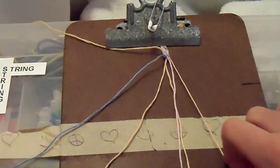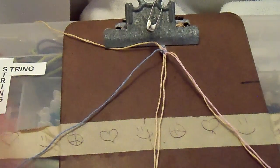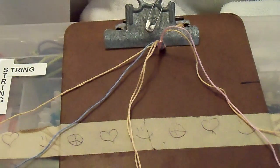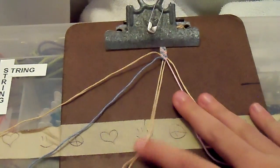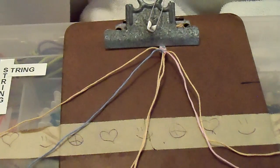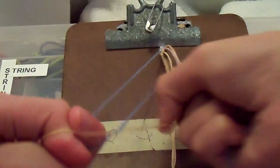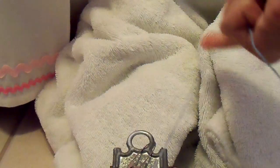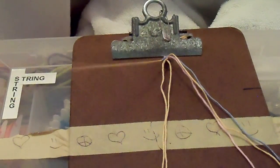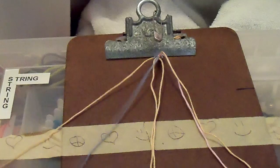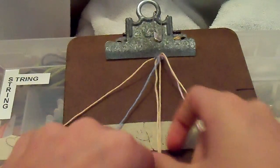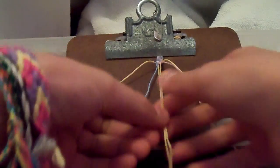Now you're going to put your outer strands back in. And with your first two, you're going to do a backwards-forward knot. And then with your last two, you're going to do a forward-backward knot.